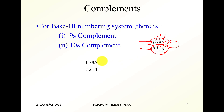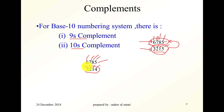For this number, the 9's complement is equal to 9 minus 5, which is 4. 9 minus 8 is 1. 9 minus 7 is 2. And 9 minus 6 is 3. So this here is the 9's complement of this number — and vice versa, this is the 9's complement of this one.